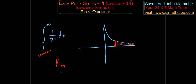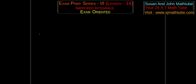Sometimes the limit will give us a finite number, and sometimes it will give us the value infinity. If we get a finite number, the integral is called convergent. If we get an infinite number, the integral is called divergent. To recap: type 1 means one of the limits will be infinity, minus infinity, or both limits can be infinite.